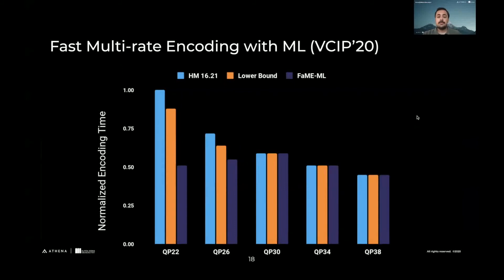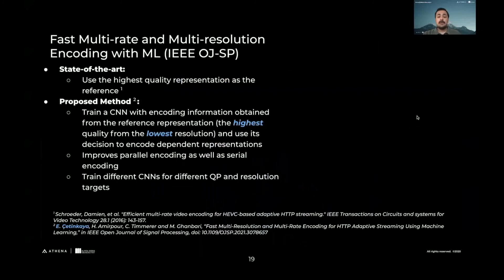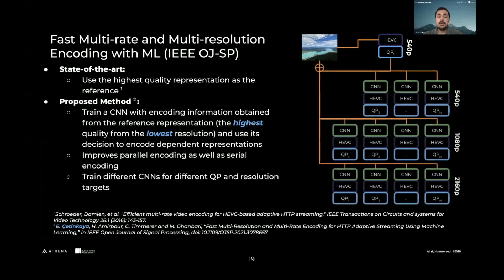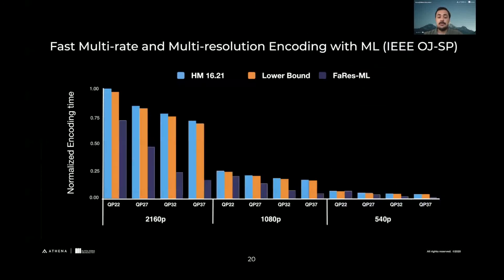We can see much better improvement in parallel encoding time compared to the MMM paper. Finally, we wanted to extend this to multi-resolution scenarios, which was our paper for the OJSP journal. Here, we used the highest quality representation from the lower resolution as a reference representation and used that information to encode all remaining representations. We trained different CNNs for each QP and resolution level, and this was the resulting time graph.